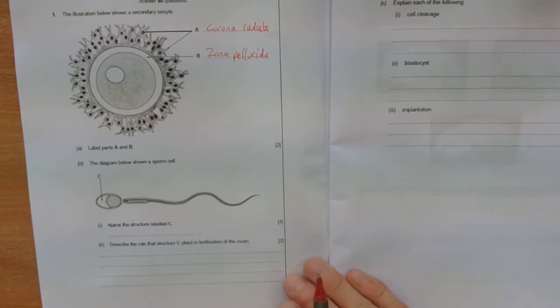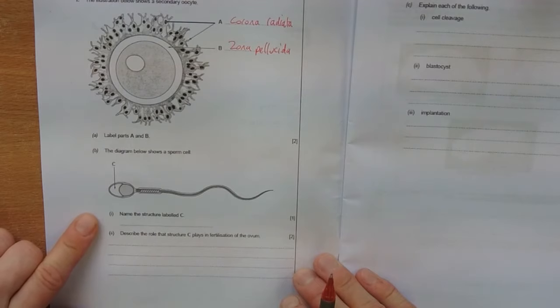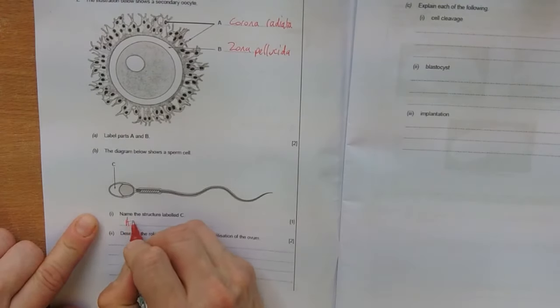The diagram below shows a sperm cell. Name structure C. And that's an acrosome.